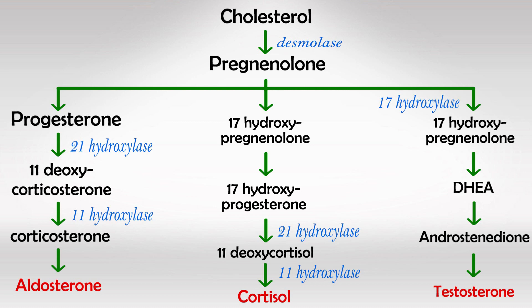Finally, in the sex hormone pathway we have two important enzymes. Aromatase synthesizes estrogens from testosterone and can be blocked by anastrozole and letrozole. 5-alpha-reductase converts testosterone into the very potent dihydrotestosterone and can be blocked by finasteride.